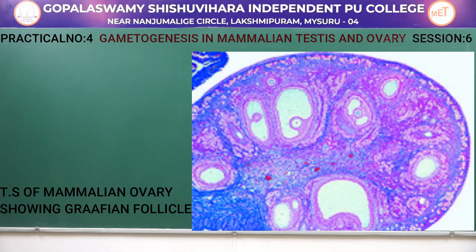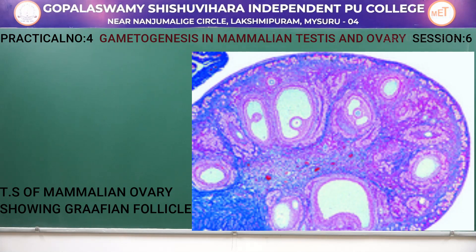This Graafian follicle has a secondary oocyte covered with a fluid-filled cavity called the antrum. This oocyte is released during ovulation on the 14th day of the menstrual cycle. The ruptured Graafian follicle develops into corpus luteum and then degenerates into corpus albicans. That is about the TS of mammalian ovary.